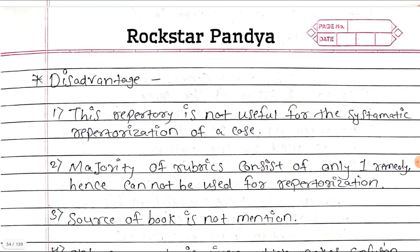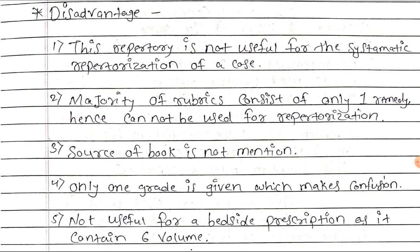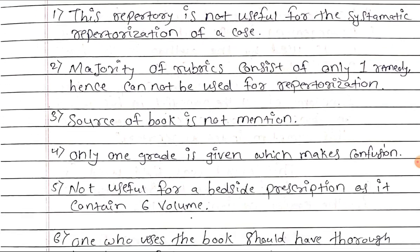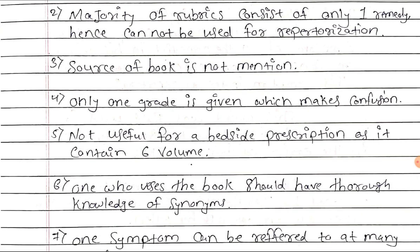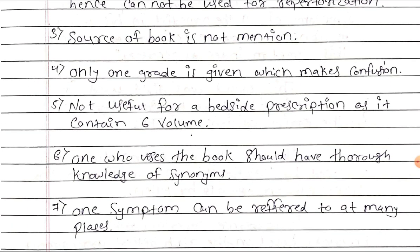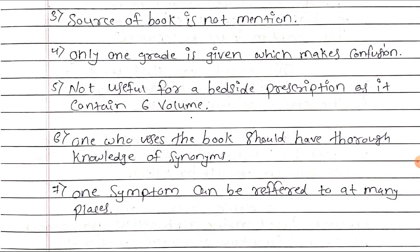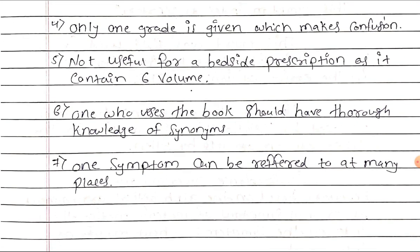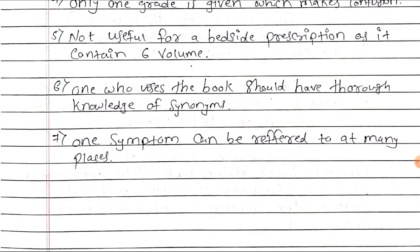Limitations: this repertory is not useful for the systematic repertorization of a case. Majority of rubrics consist of only one remedy, hence it cannot be used for repertorization. The source of the book is not mentioned. Only one grade is given, which causes confusion. It is not useful for a bedside prescription as it contains six volumes. Also, the user should have thorough knowledge of synonyms, as one symptom can be referred to at many places.